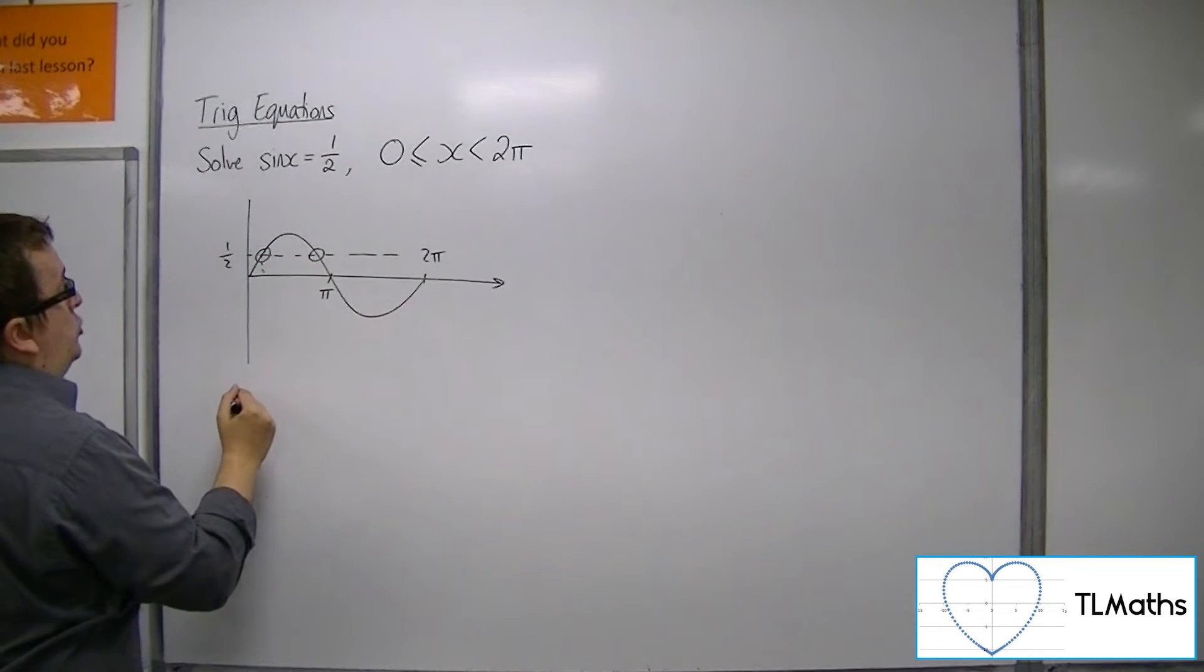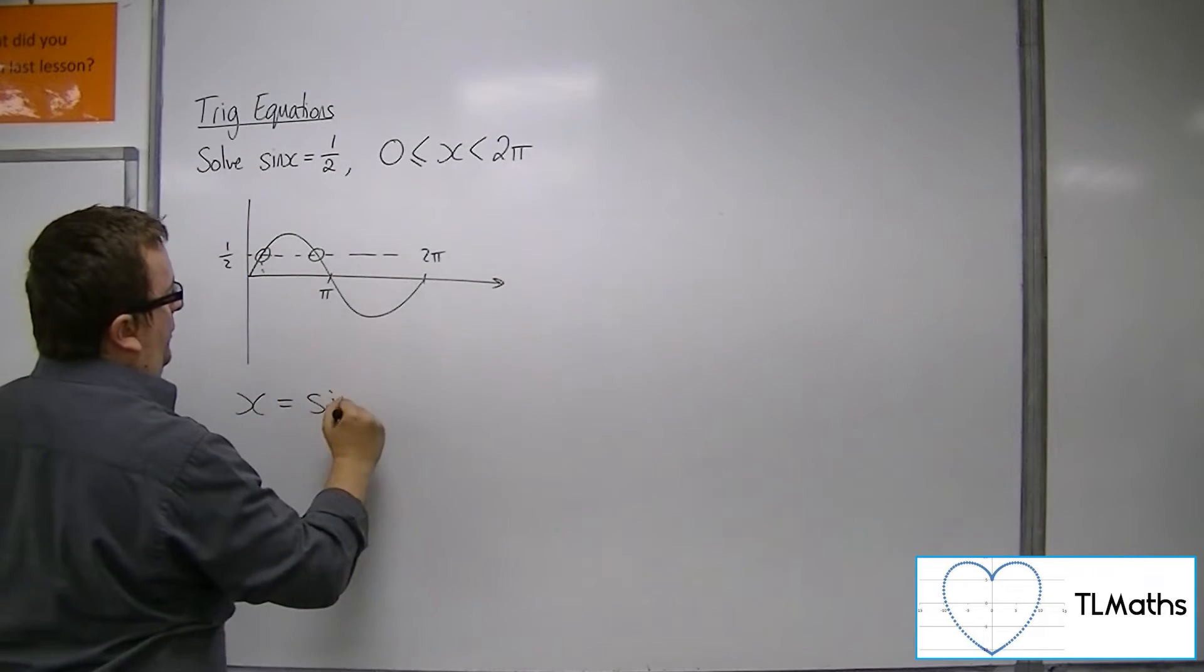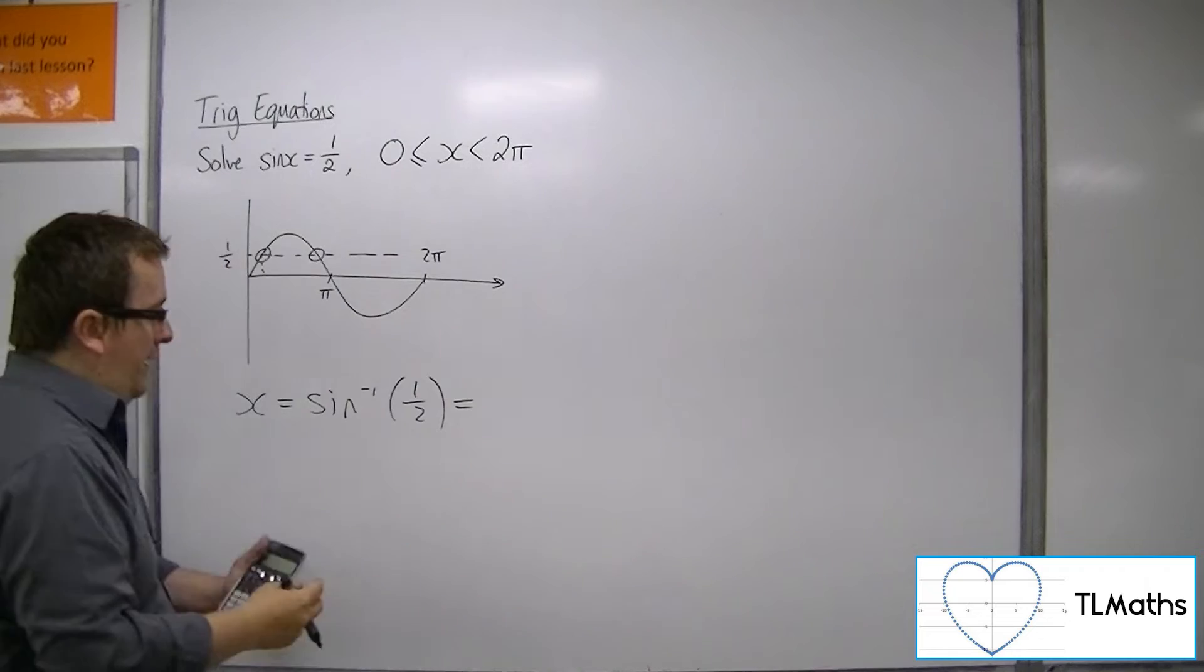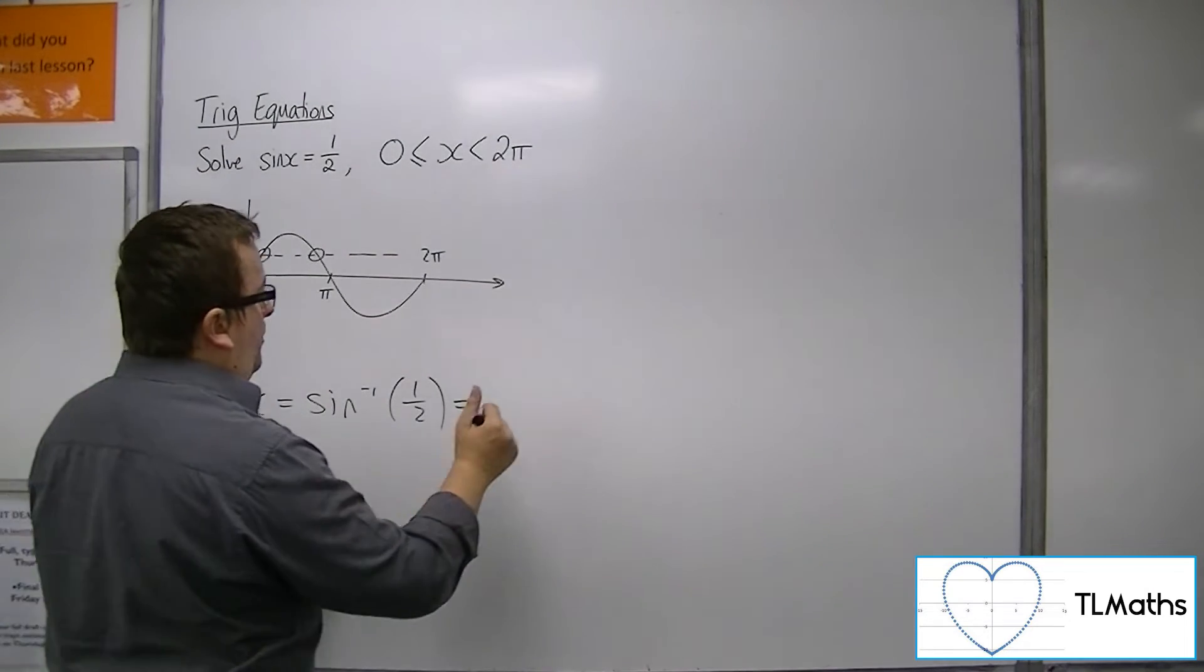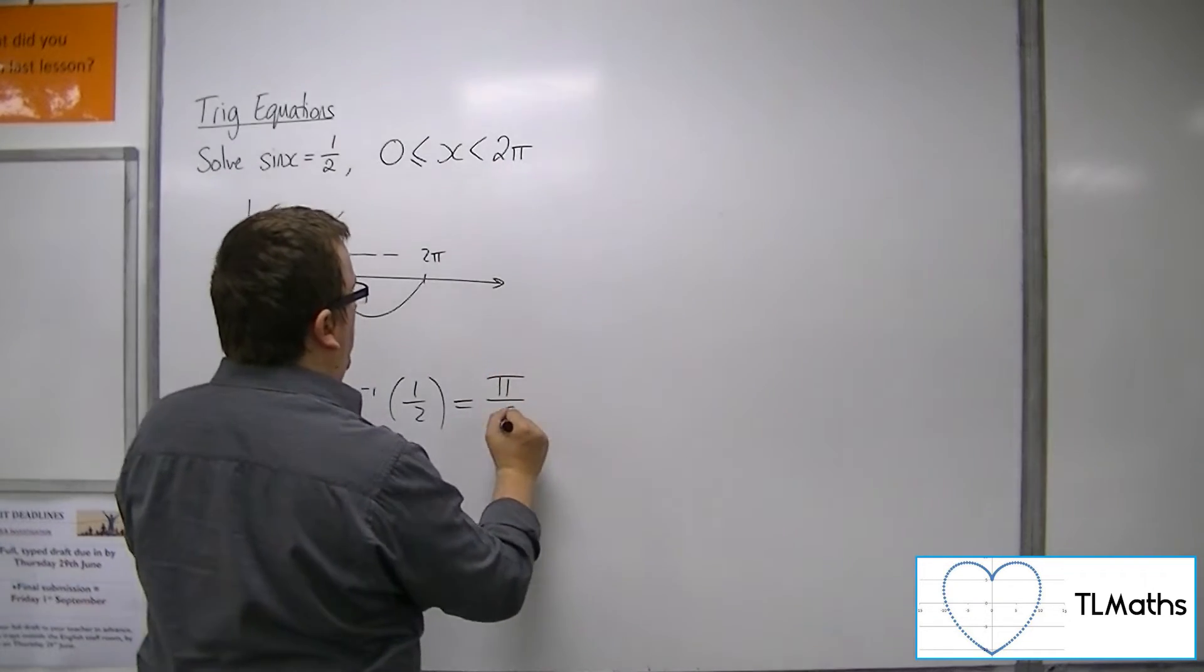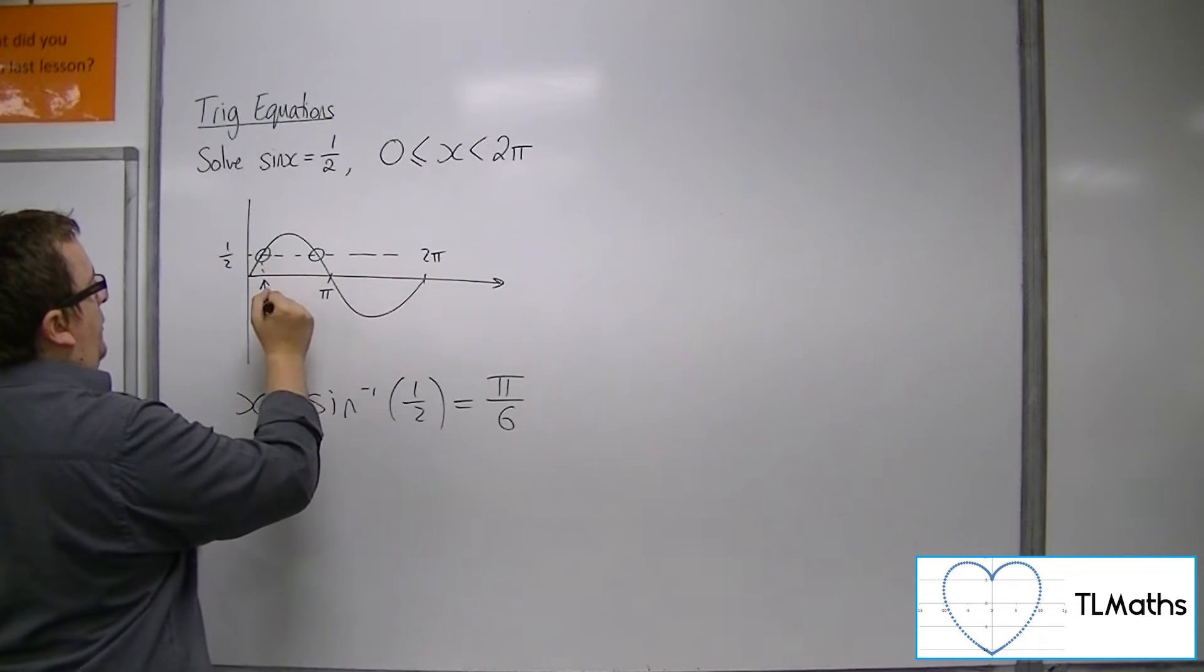Now the first solution can be found by inverse signing one half. Make sure your calculator is in radians. So inverse sine of one half is pi over 6, or one sixth pi. So that is your first solution.